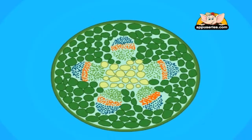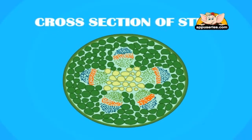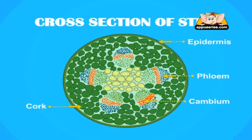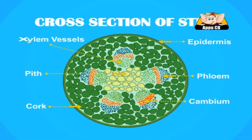If we look at a cross section of a stem, we can clearly see the different parts of it, which include: Epidermis — the outer layer of the stem; Phloem vessels — tubes that carry sap; Cambium — new parts of the stem; Cork — the protective covering of the stem; Pith — the central part of the stem; and Xylem vessels — the woody part of the stem.